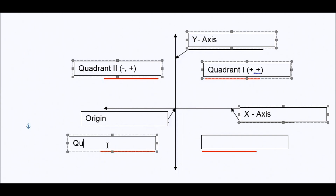Your next quadrant we call quadrant three. Your x, because you're to the left of the origin, is negative — just like a number line. Your numbers on the left are negative, left of zero. Numbers below are also negative. So all your coordinates — we call them coordinates — all your coordinates in this quadrant, quadrant three, both numbers will be negative: your x and y coordinate.